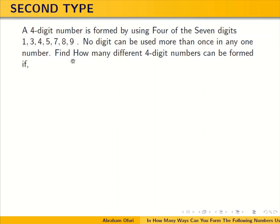So, the second type — we have a question like this. A 4-digit number is formed by using 4 of the 7 digits: 1, 3, 4, 5, 7, 8, and 9. So we are supposed to use any of these 7 digits to form a 4-digit number. No digit can be used more than once in any one number.